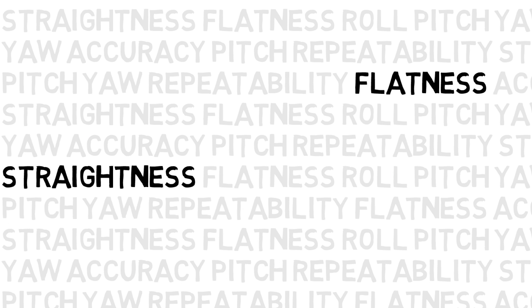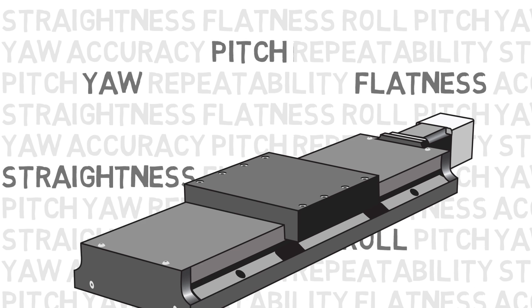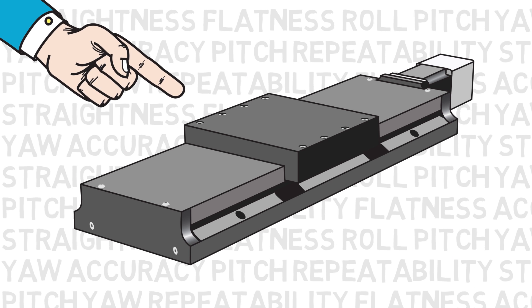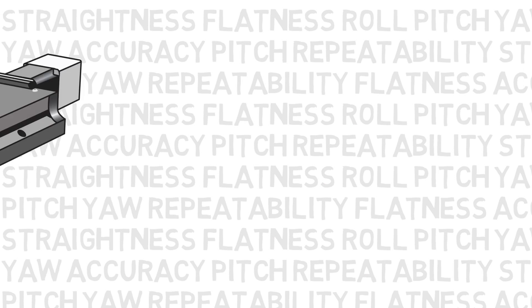The five errors covered are straightness, flatness, roll, pitch, and yaw. We will use this graphic to help you visualize each of these errors.